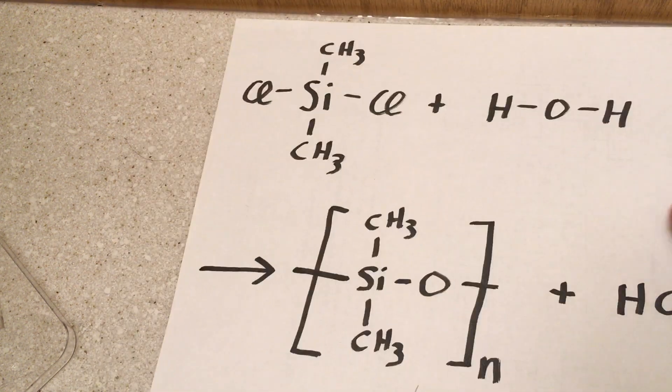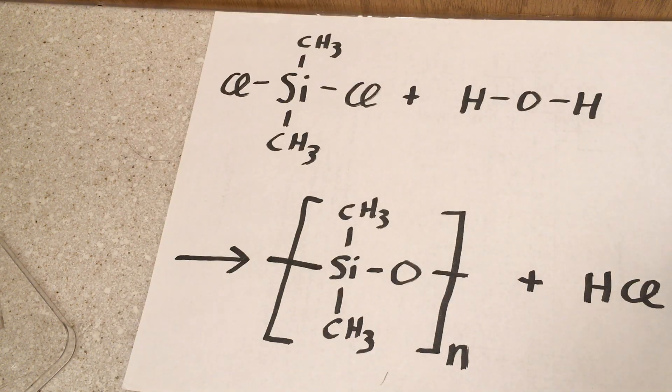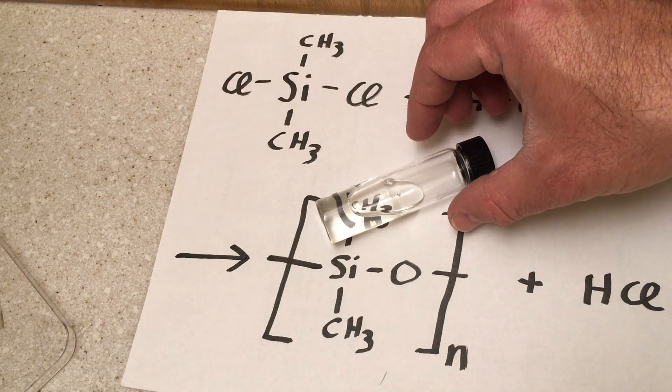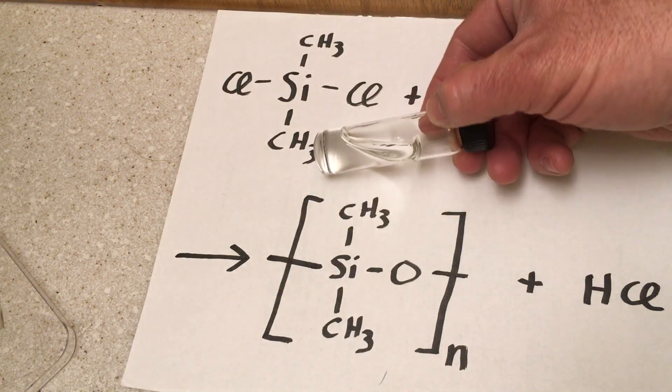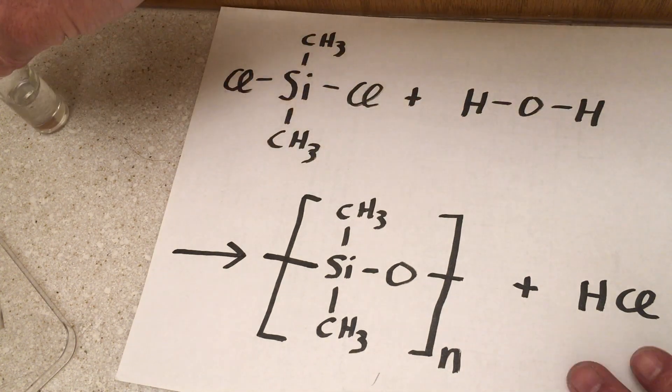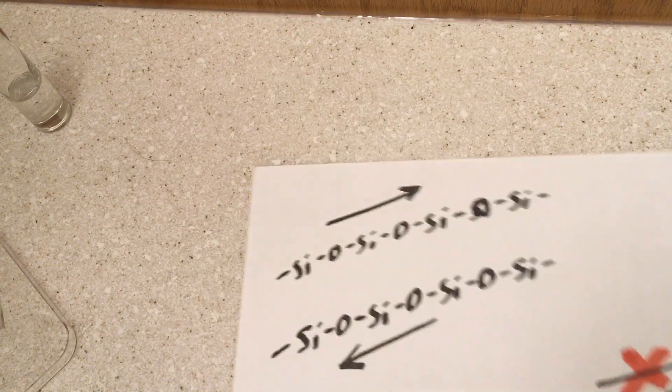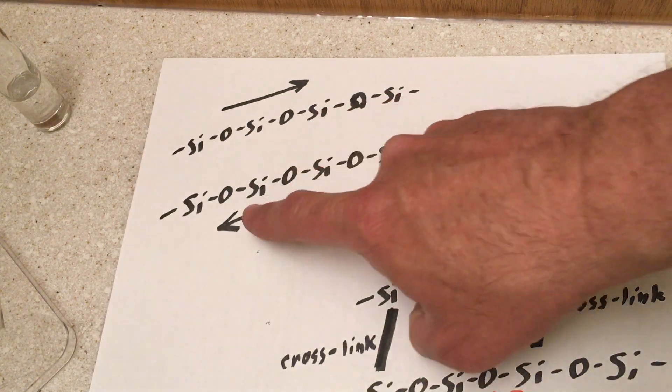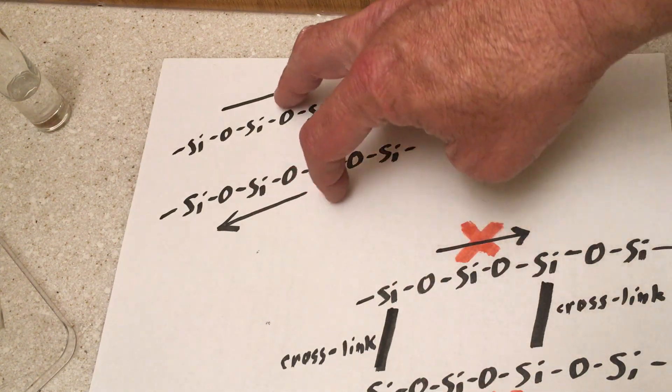Now if we make short chains of this, as I showed this, it actually makes sort of a viscous liquid. And what's happening in that liquid as it flows is that the chains of silicon and oxygen are sliding past each other.